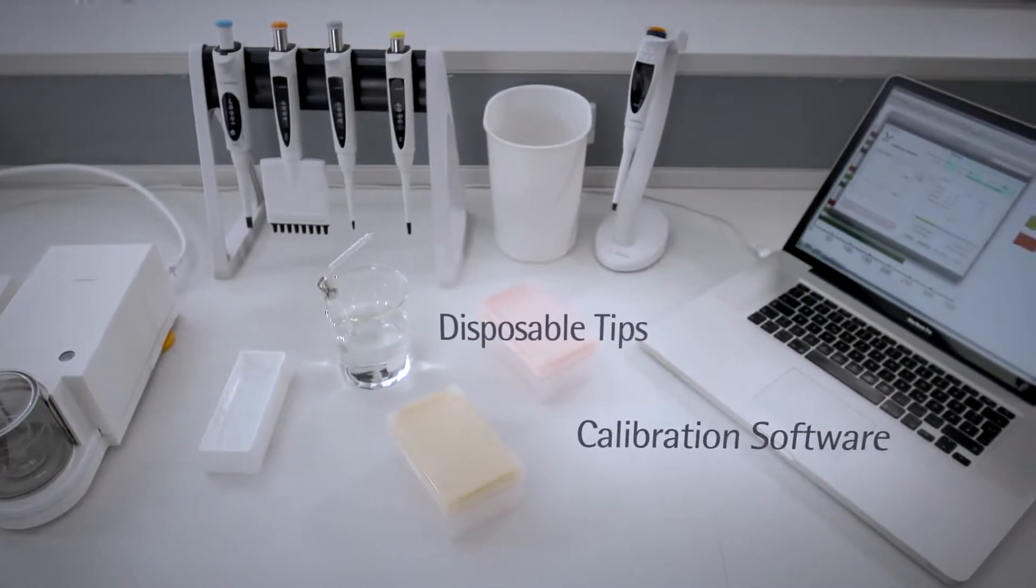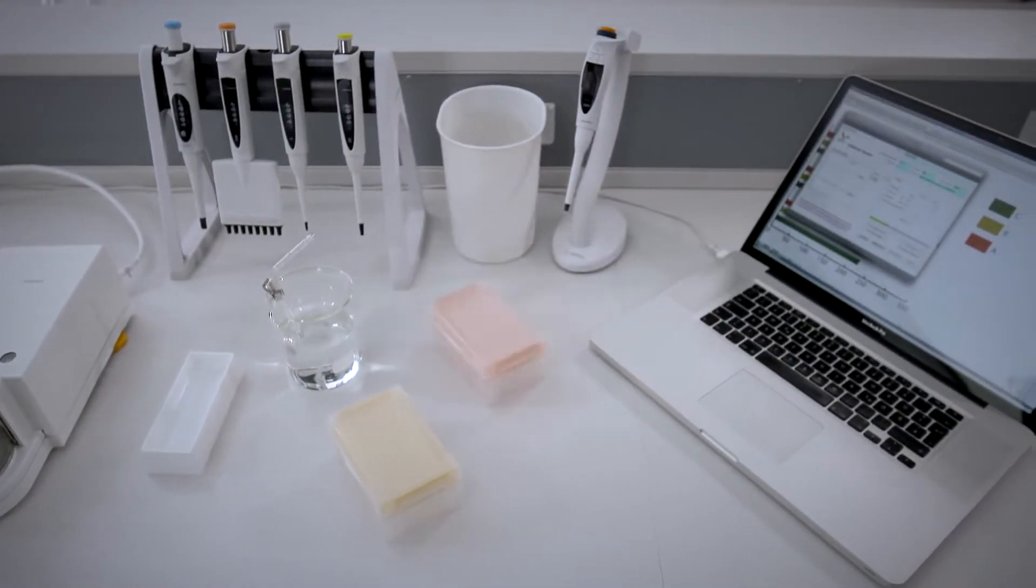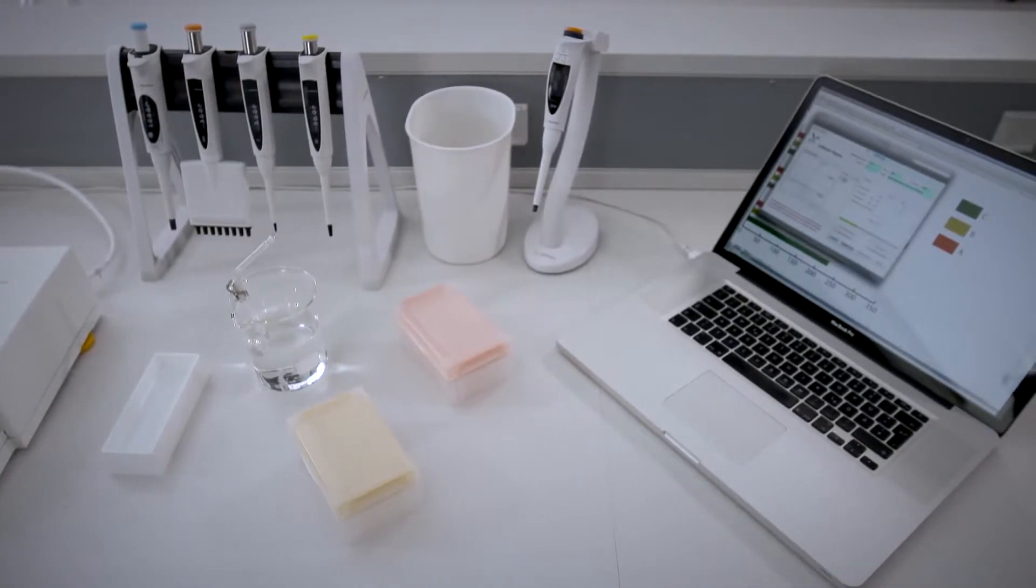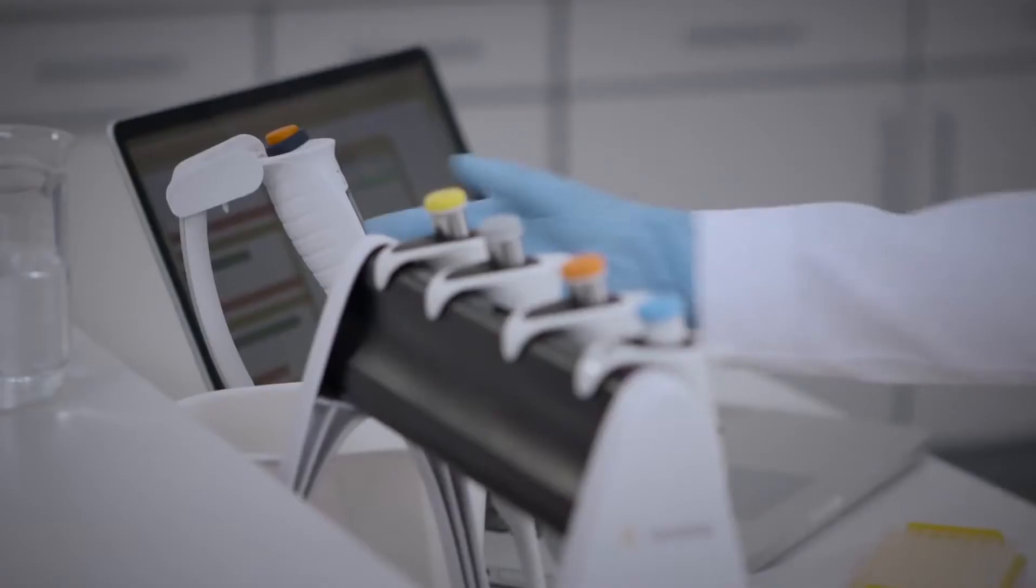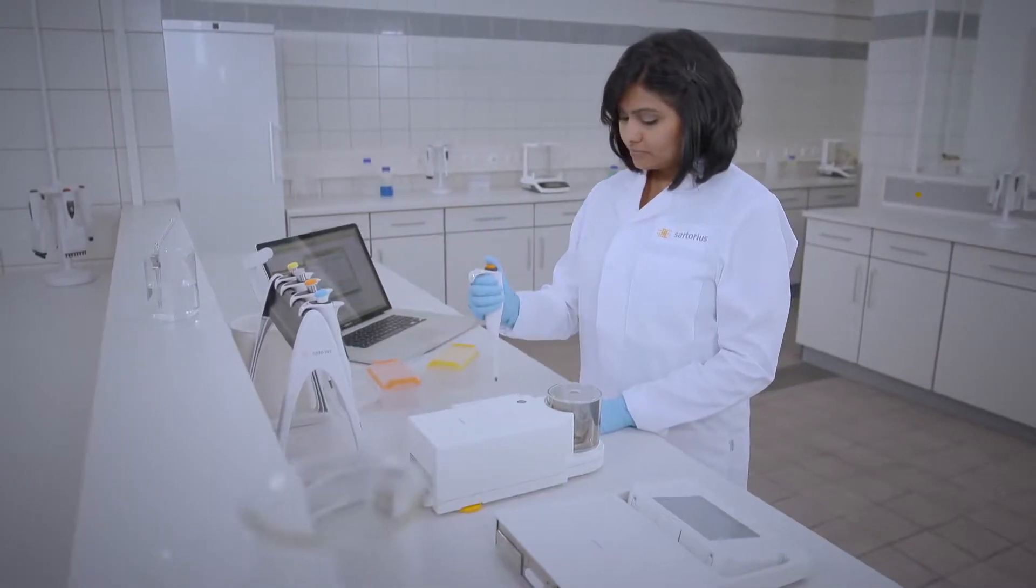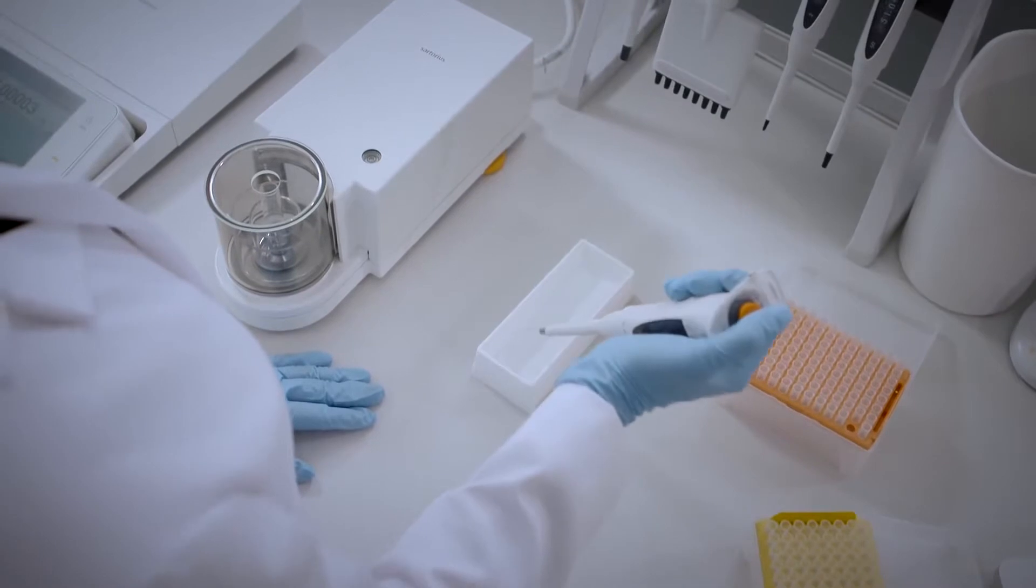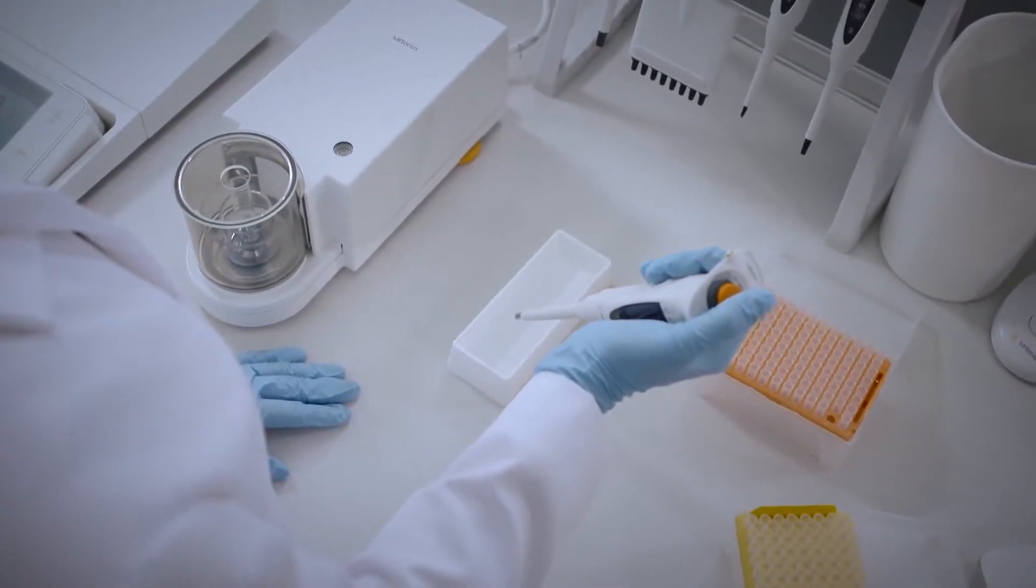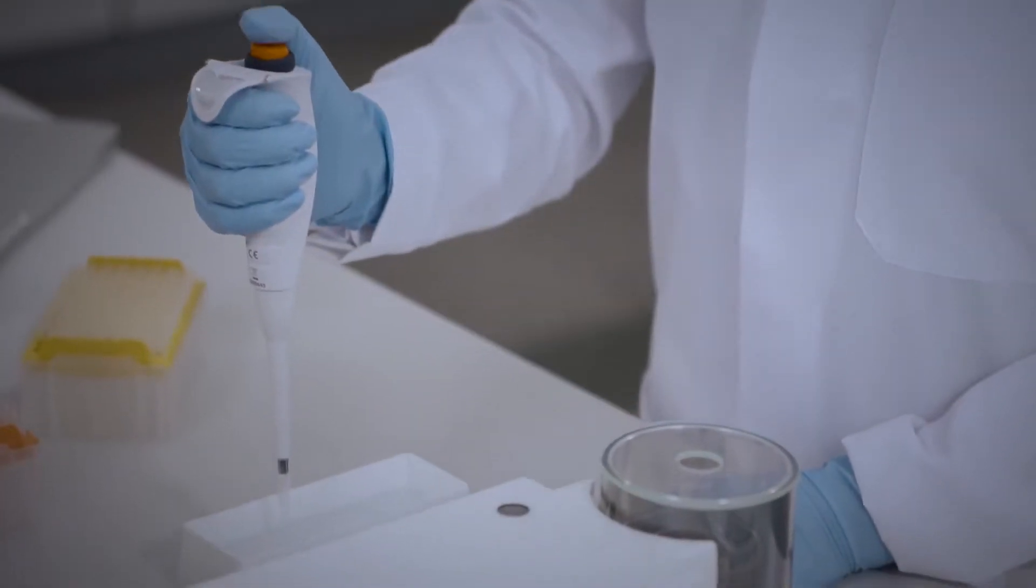Besides the equipment, the procedures are also important for the reliability of calibration results. First of all, it's important to pre-wet the pipette three to five times before starting the calibration to eliminate evaporation of the water into the airspace inside the pipette.